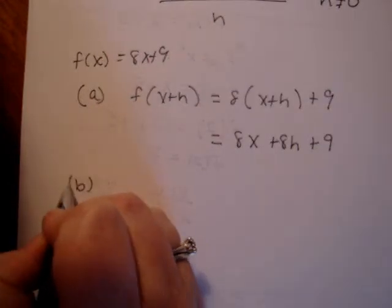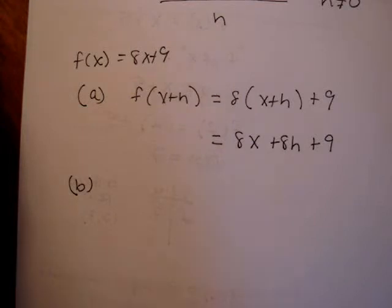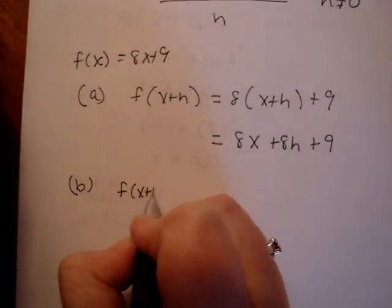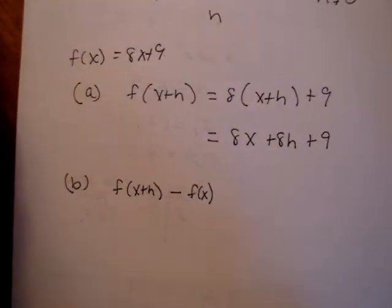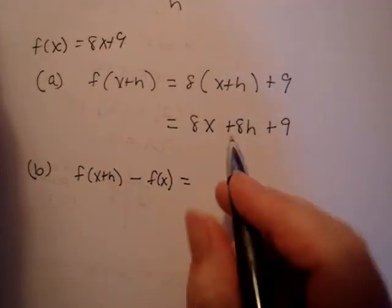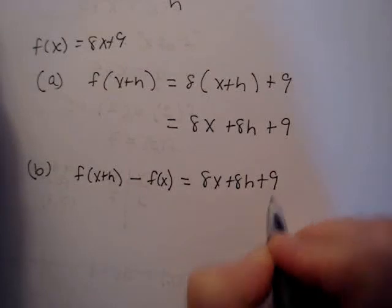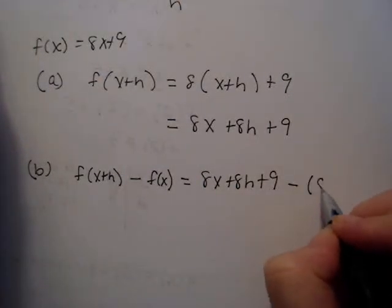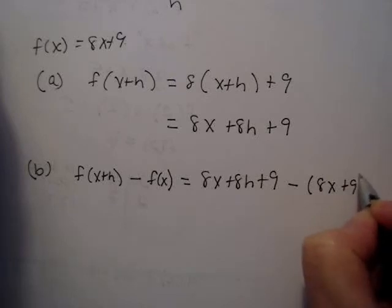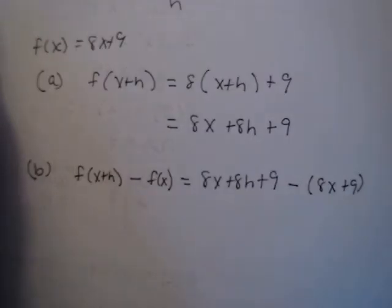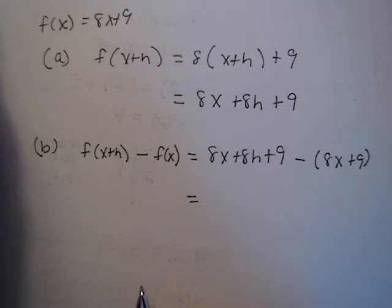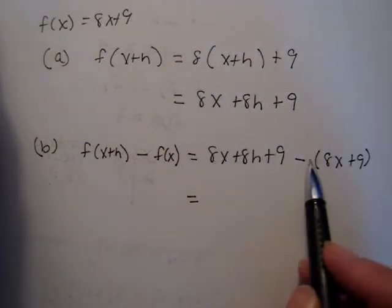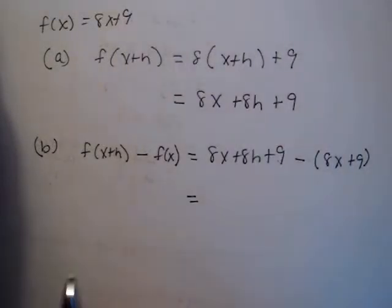Step b, the second step, is take your answer from part a, which would be this part, f of x plus h, and subtract off f of x, the original function. So let's do that. What's my answer from part a? 8x plus 8h plus 9. And I want to subtract my original function, which would be 8x plus 9. Don't forget your parentheses, because we're subtracting the whole original function. And I'm going to skip a step, I'm sure you can handle it. And look what happens, 8x minus 8x is 0, 9 minus 9 is 0, I'm just left with 8h.